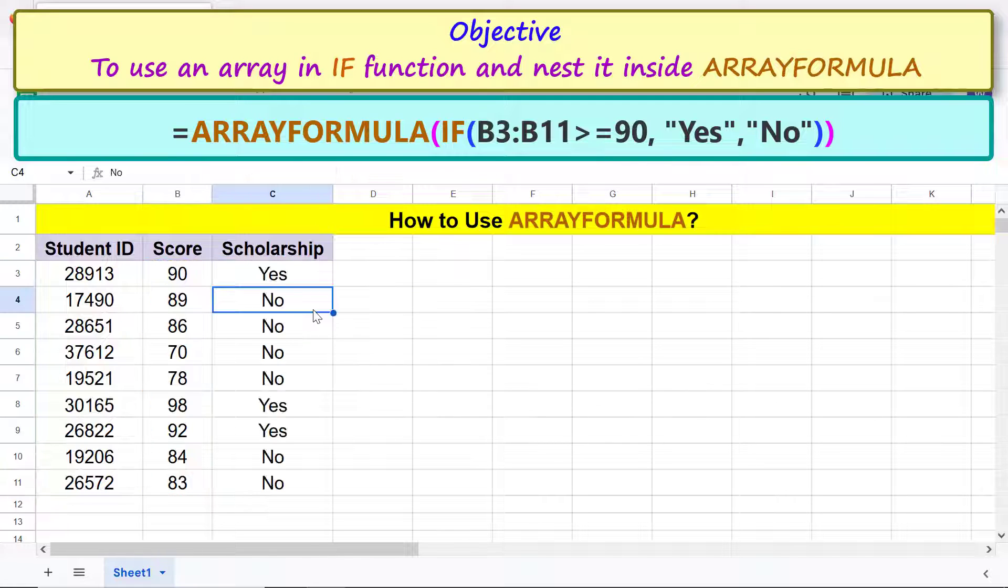I will type the remaining two arguments of IF. Press Enter. There you go, the array formula has automatically expanded its result to all the other cells.